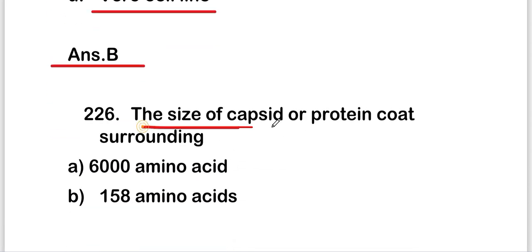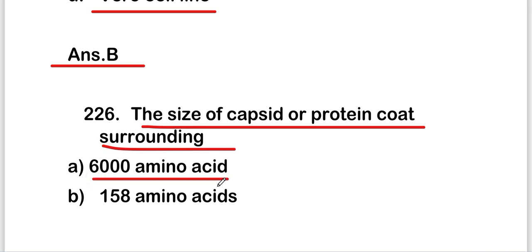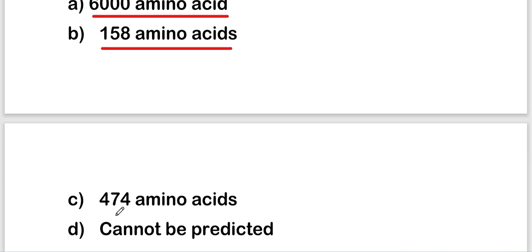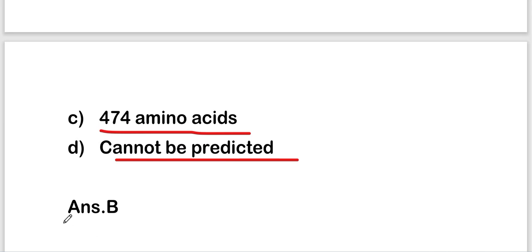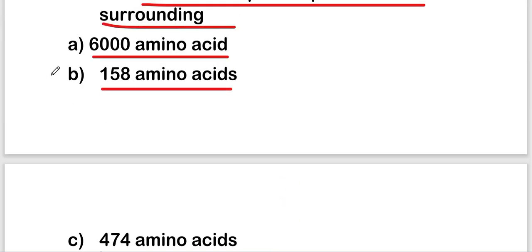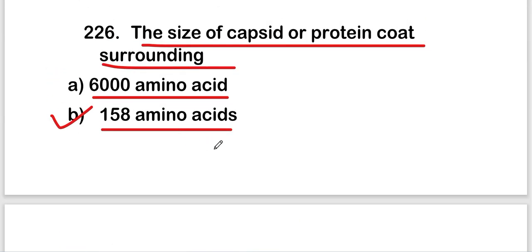The next question: what is the size of the capsid or protein coat? Options are 158 amino acids, 158 amino acids, 474 amino acids, or cannot be predicted. The right answer is option B — the capsid or protein coat of a virus contains 158 amino acids.